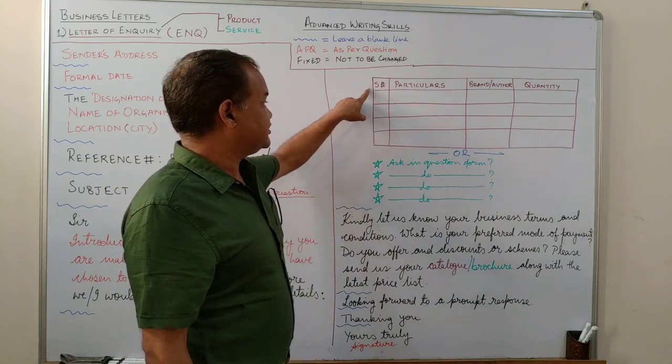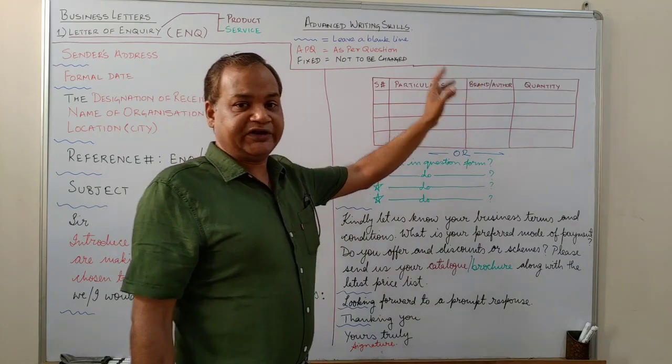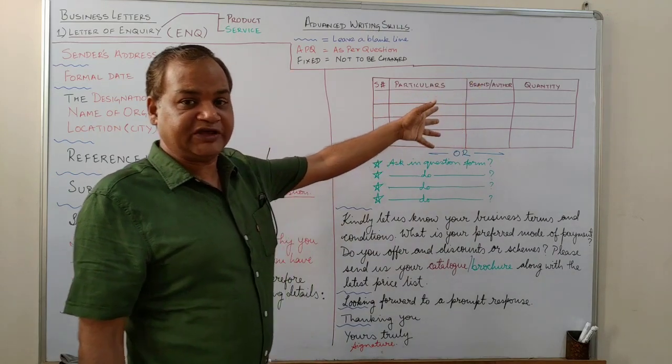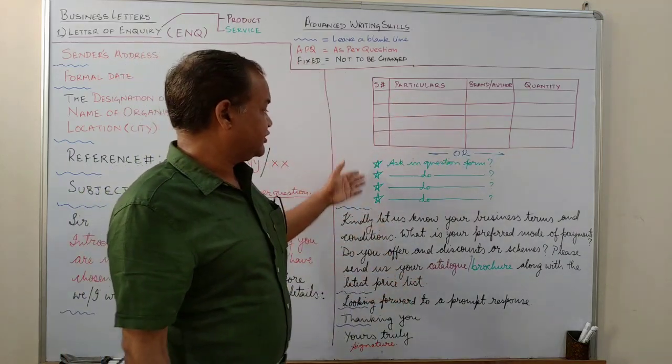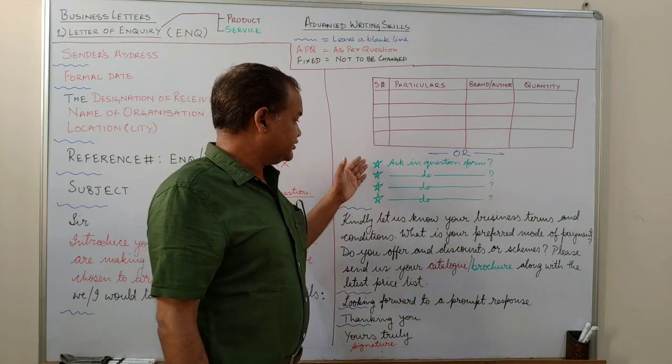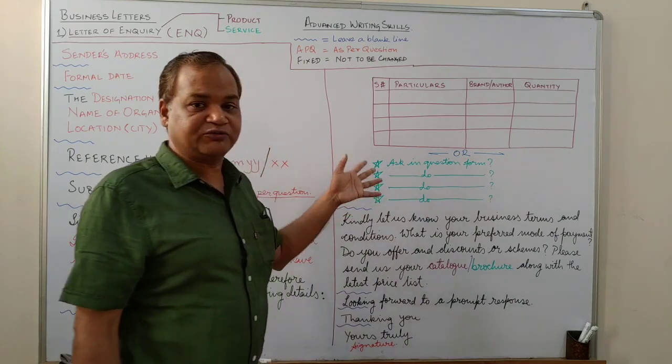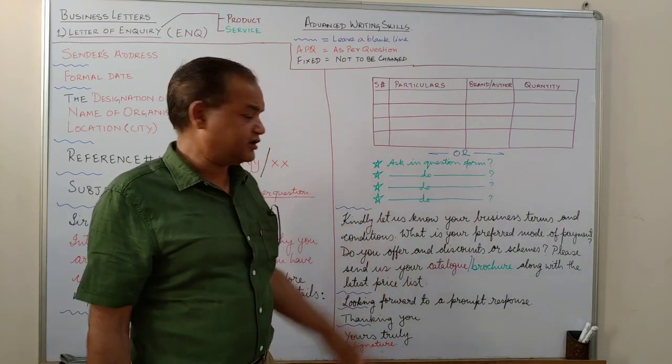So let's keep it like this. Indented one inch from the left margin towards the right. Then write down the details, serial number, particulars, brand or author or any other detail that you'd like, publication, and then the quantity that is required. Similarly, for queries based on service, you will write these. Use stars, pentagrams or bullet points to ask your questions. You can even write one, two, three, four, five. That's okay.